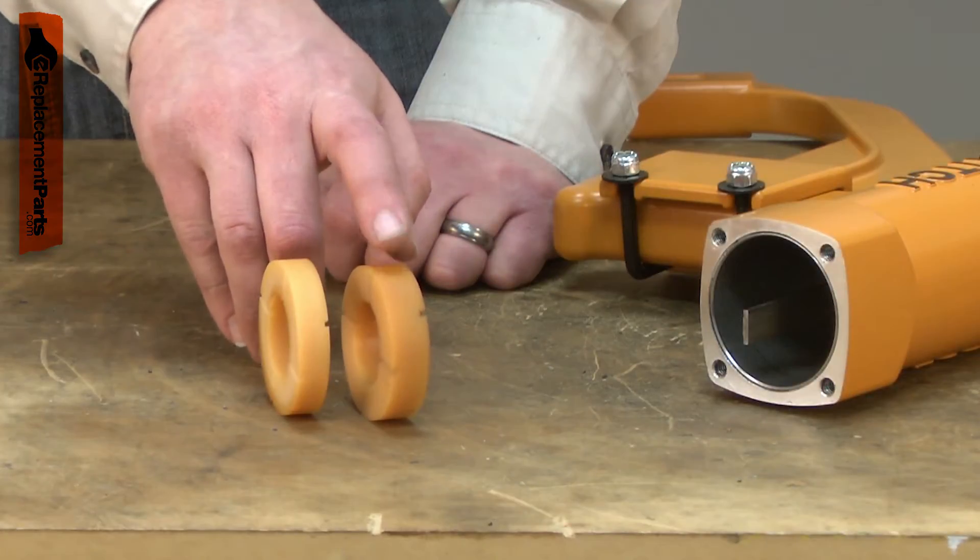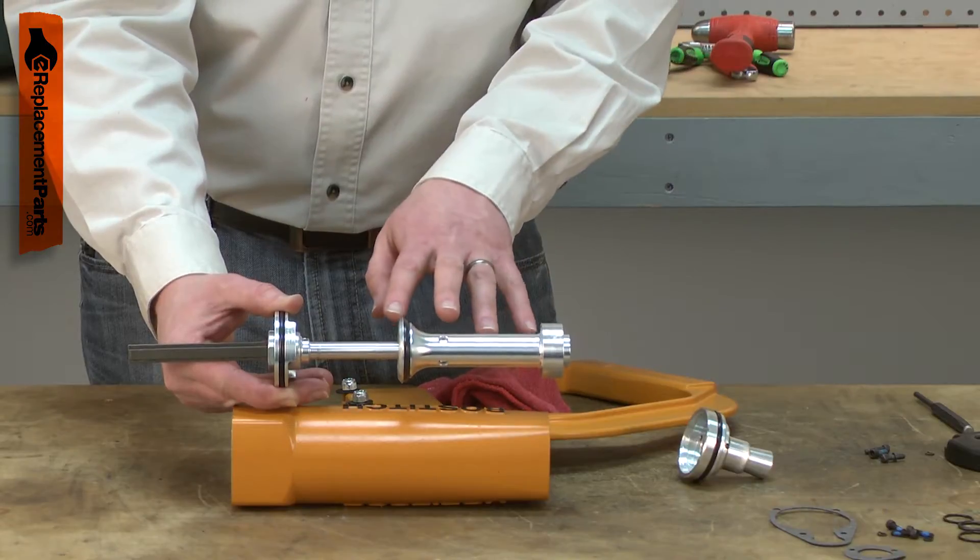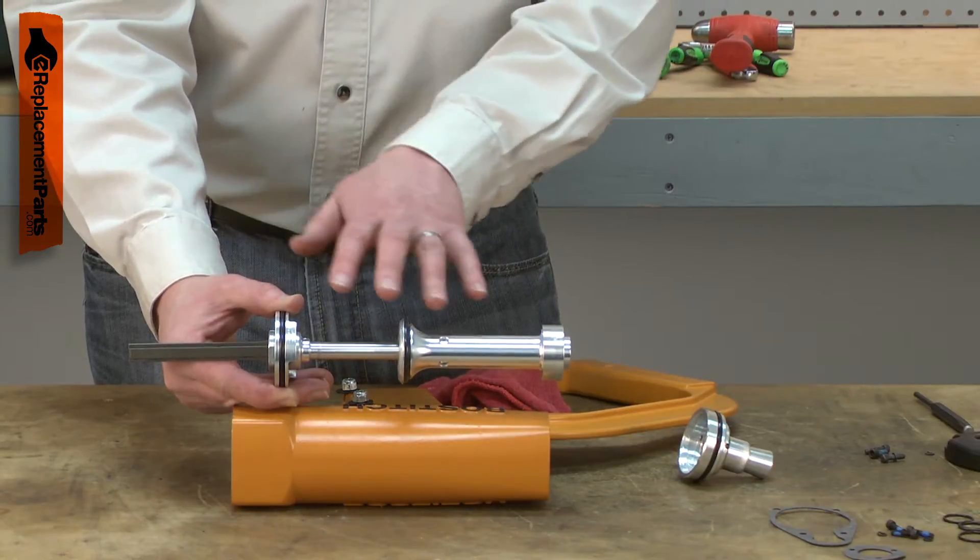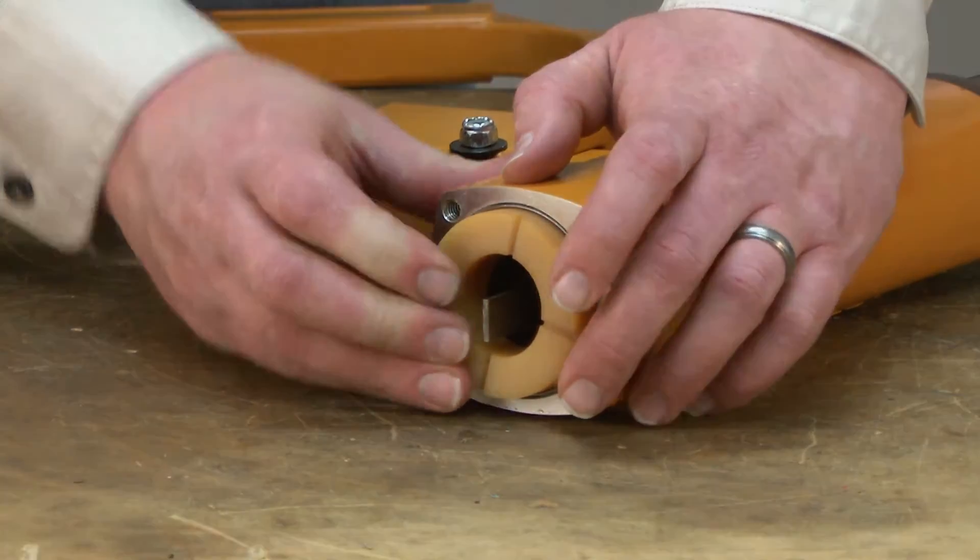Over time, the bumper will weaken and begin to deteriorate and crumble. This will eventually lead to reduced cushioning effect and potential piston damage. Replacing the bumper is a repair that you can do yourself and I'm going to show you how.